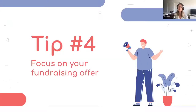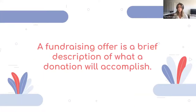Tip number four: focus on your fundraising offer. Donors give when they know the value of their gifts, so to communicate this impact you need a fundraising offer, also known as a value proposition. What will a donation accomplish? If you're fundraising for an environmental organization, this could be something like: 'A $20 donation helps plant 50 trees in the Amazonian forest.' It's an oversimplified statement, but it's emotionally powerful and easy to communicate via email. You want it to be simple, digestible, and impactful.